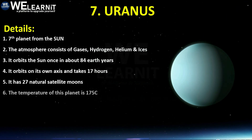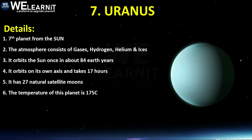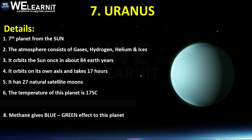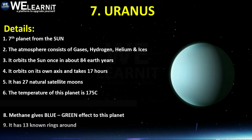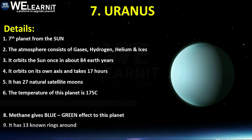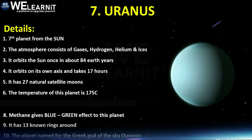The temperature of Uranus is minus 175 degrees Celsius. Methane gives the blue-green color effect to this planet. It has 13 known rings around it. This planet is named for the Greek god of the sky, Uranus.